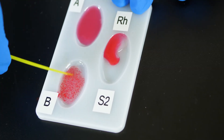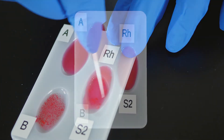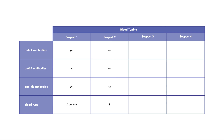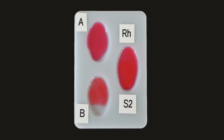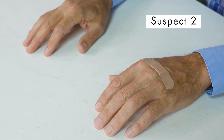Now we follow the same procedure to test the blood of suspect 2. The cells in well A show no reaction, but the cells in well B are sticking together, as are the cells in the Rh well. We conclude that this blood type is B positive. Since the blood of suspect 2 does not match the blood found at the crime scene, suspect 2 is probably not the one who took the sandwich.